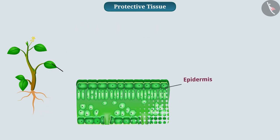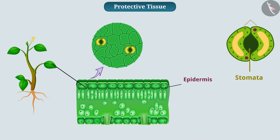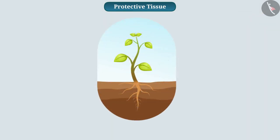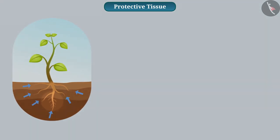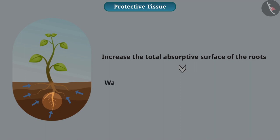The epidermis of leaves has small pores called stomata. The stomata are surrounded by two kidney-shaped cells called guard cells. The stomata and the guard cells perform gaseous exchange and the process of transpiration. Similarly, epidermal cells present in the roots absorb water. These cells have hair-like projections that increase the total absorptive surface of the roots, which increases the water absorption capacity of the root.